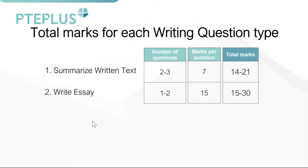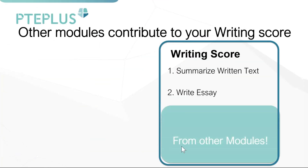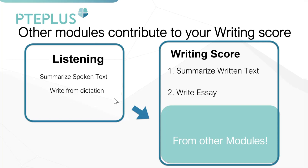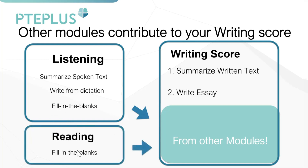Question types from other modules and sections in your exam also contribute to your writing score. A big chunk comes from your listening section, especially Summarize Spoken Text and Write from Dictation. In listening, these two are worth the most marks and they also contribute significantly to your writing marks. Fill in the Blanks from both the listening and reading sections also add to your writing score, because all of these question types require you to either listen or read and then write in your response — that's why they reflect your writing ability.